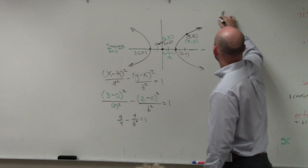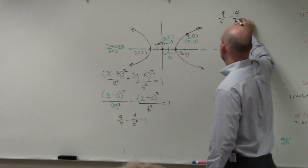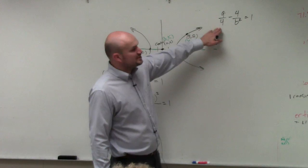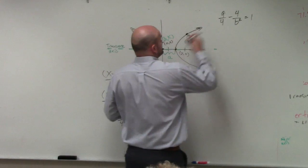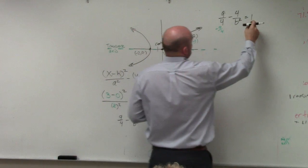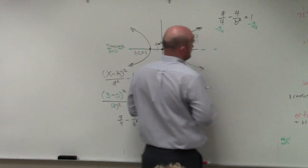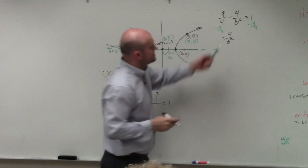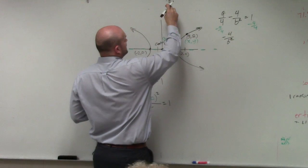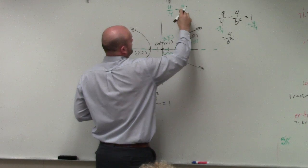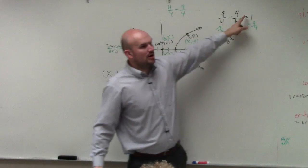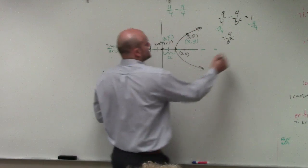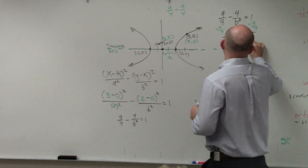So let's say we have 9 over 4 minus 4 over b squared equals 1. We need to solve for b squared. This is a good algebra 2 question. First thing we need to do is isolate the variable. So I'm going to subtract 9 fourths on both sides. Minus 9 fourths. I can convert this so that's negative 4 over b squared. If you guys can think of the 1, you can think of 1 as 4 over 4 minus 9 over 4. Would you guys agree? 1 minus 9 fourths is the same thing as 4 fourths minus 9 fourths. So therefore, that's equal to a negative 5 over 4.